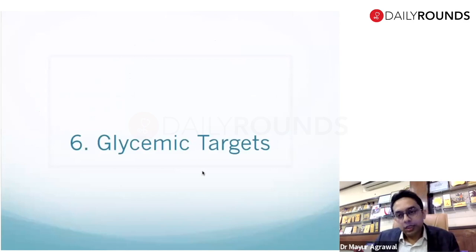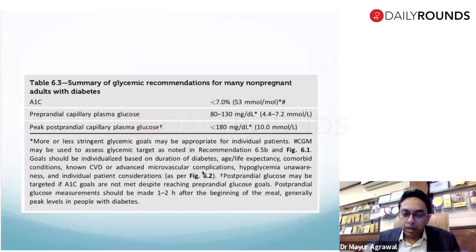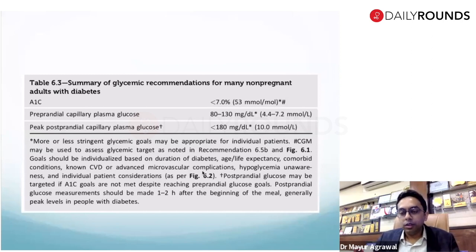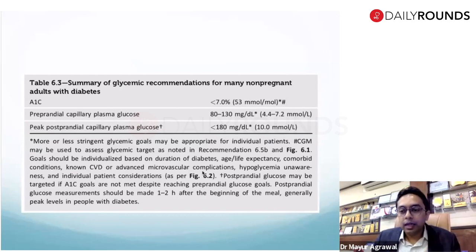Coming to Section 6 — glycemic targets. The targets remain the same: HbA1c less than 7%, pre-meal glucose 80–130 mg/dL, post-meal less than 180 mg/dL. Individual targets are relaxed for patients with comorbidities, those who are socially challenged, or those living alone — all the same as the previous guideline.